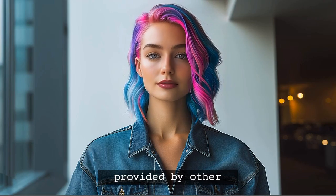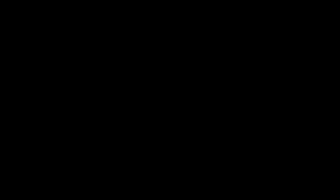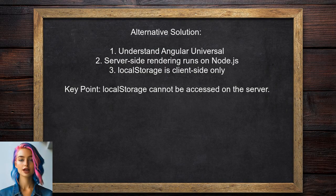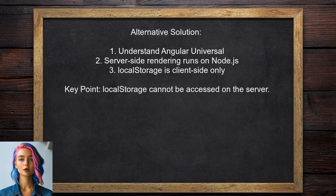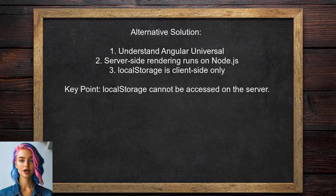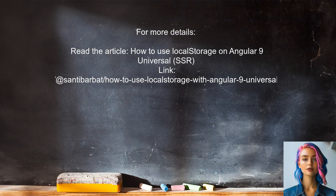Now let's look at the answers provided by other users. When using Angular Universal for server-side rendering, the Angular app runs on both the Node.js server and the client browser. The issue arises because local storage is only available on the client-side, not on the server. They also mention having written an article detailing a solution for using local storage with Angular Universal — you can find it linked in the description for more in-depth guidance.